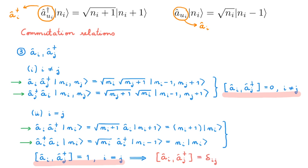Before summarizing the commutators, note that we obtained such a simple expression because of the normalization choice we made at the very beginning for the action of the creation operator. If we had made a different normalization choice, this commutator would give some other number rather than 1 for i equals j. In fact, we could have taken the commutation relation as the given assumption and then derived the normalization constant - these two choices are equivalent.